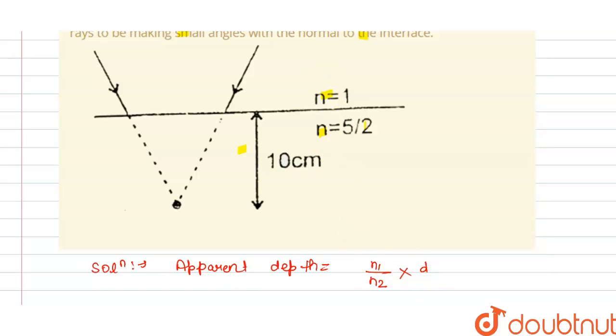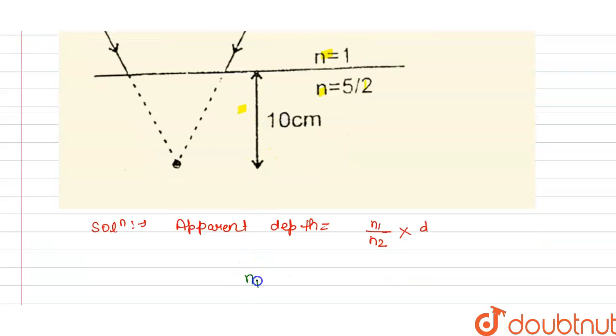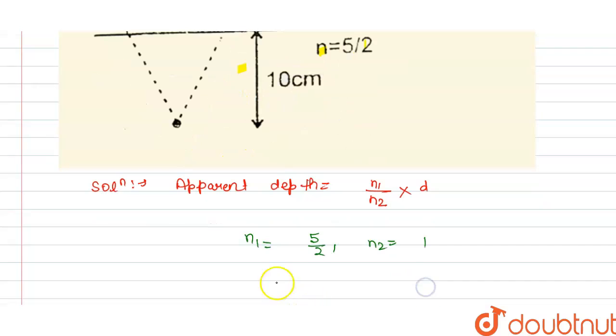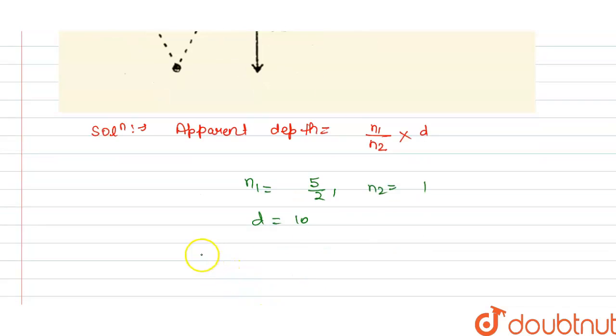So we have n1 is 1, or we can say that n1 is 5 by 2, and we have n2 is 1, and we have the d is 10 centimeter. So from this we get apparent depth...